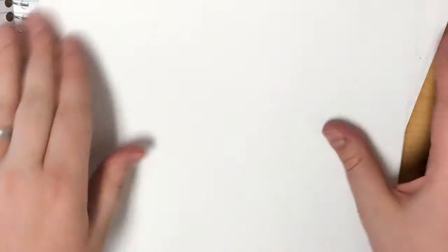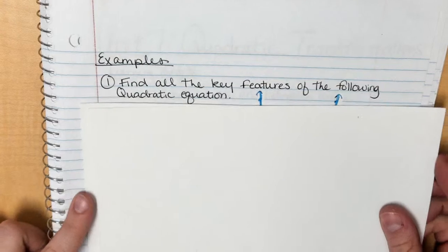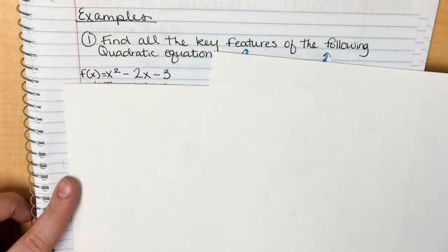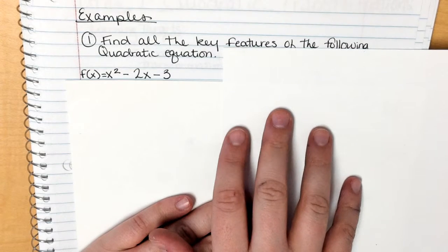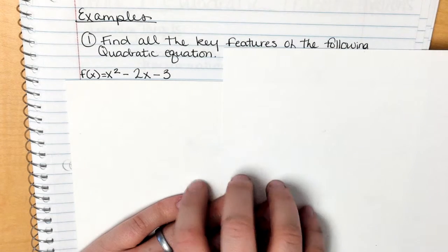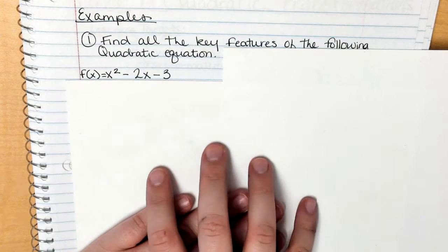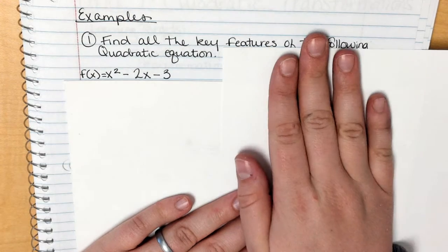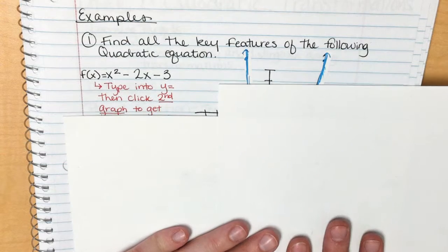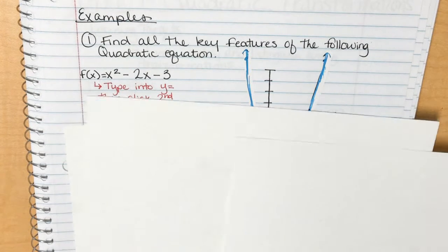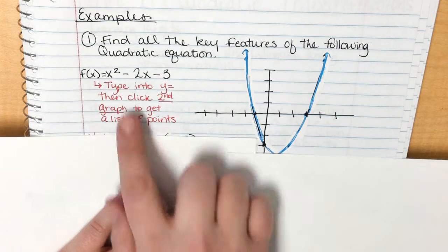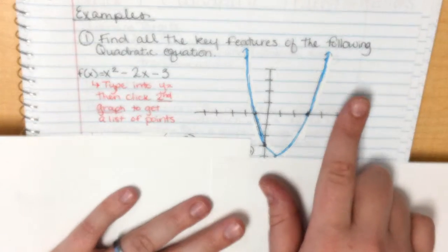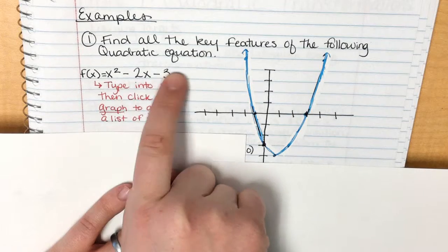Let's look at some examples. The first example asks for the key features of the quadratic x squared minus 2x minus 3. I recommend graphing it first. To graph on paper, type the equation into Y= on your calculator, then click SECOND GRAPH to get a list of points.